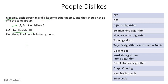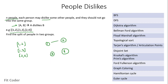Let's create a graph with this data. 1 dislikes 2, 1 dislikes 3, and 2 dislikes 4. If these persons are the vertices of a graph, there is an edge from 1 to 2, from 1 to 3, and from 2 to 4. This problem is a typical case for graph coloring because graph coloring is used to check whether a graph is bipartite or not.